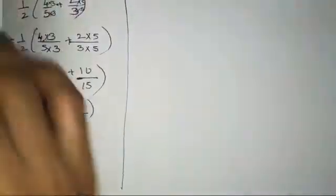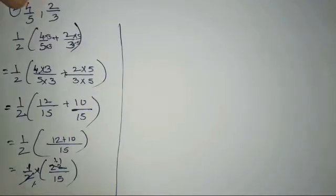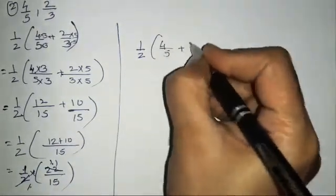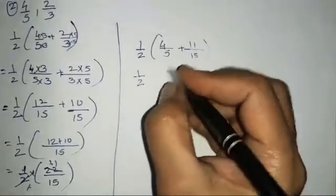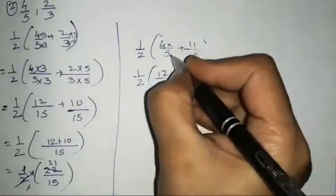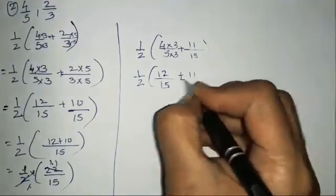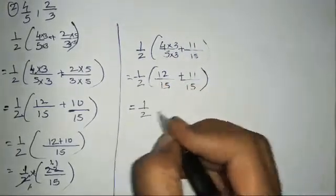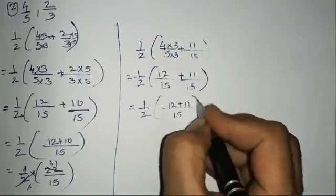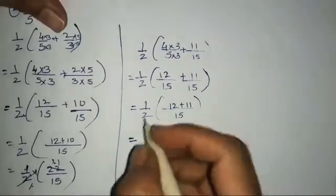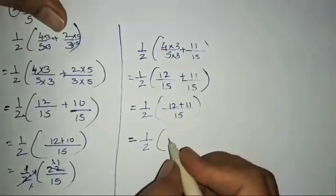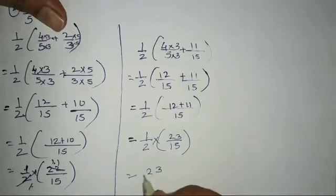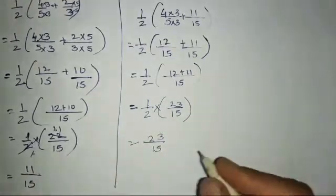For the next set, we take 11/15 and the first fraction 4/5. So half of (4/5 + 11/15). Since 4/5 multiplied by 3 gives 12/15, we write half of (12/15 + 11/15) = half of 23/15. This cannot be reduced, so 1 into 23 is 23 and 2 into 15 is 15. Answer: 23/30.